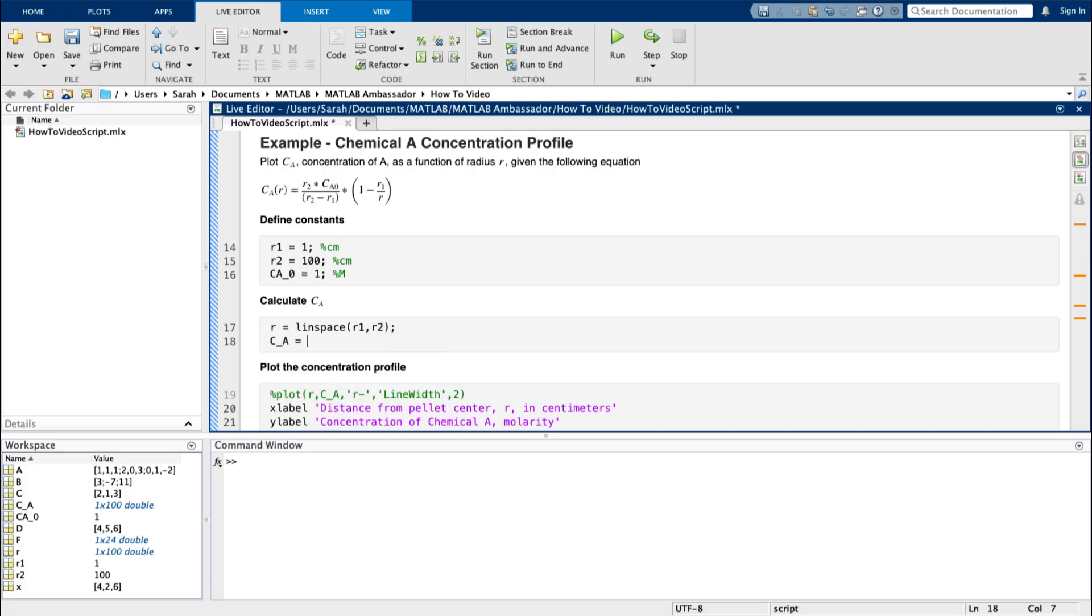First, I used Linspace to generate my length vector r. Now, to calculate c in MATLAB, pay careful attention to my use of the dot operator. My variables r2, CA0, and r1 are all scalar, so no dot operator is necessary. However, I need to use a dot operator when I am dividing r1 by the length vector r, since this is a scenario where both array and matrix operations are possible.